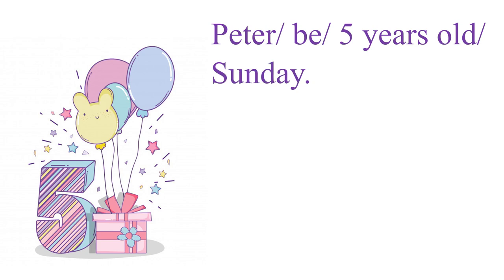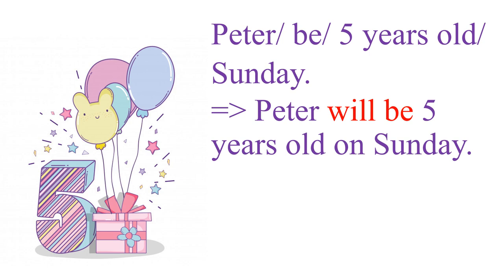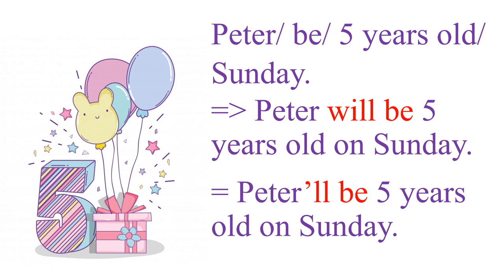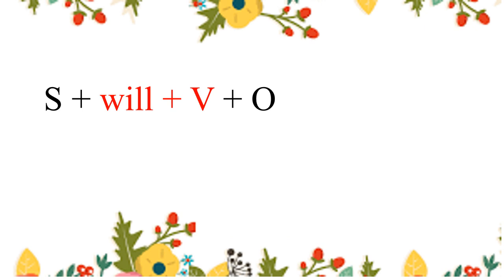Next example: 'Peter be five years old Sunday.' How do you make a sentence? My sentence is: 'Peter will be five years old' — using 'will be.' The structure is: Subject + will + verb + object, or Subject + 'll + verb + object. They are the same. Is it easy to remember?